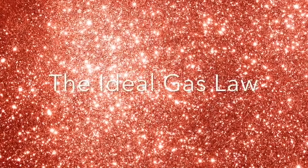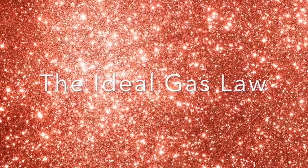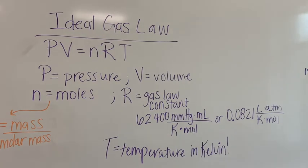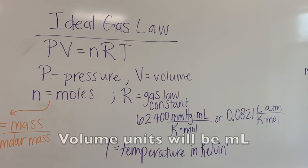We're going to be doing this by using the ideal gas law. You can see here the ideal gas law written on the board: PV equals nRT. P is pressure — today we're going to use pressure in millimeters of mercury, that is mmHg.